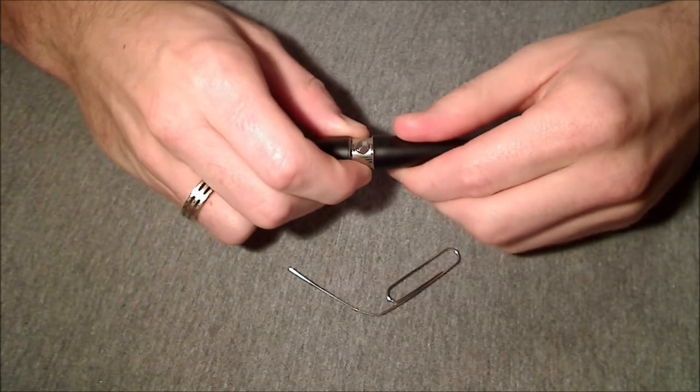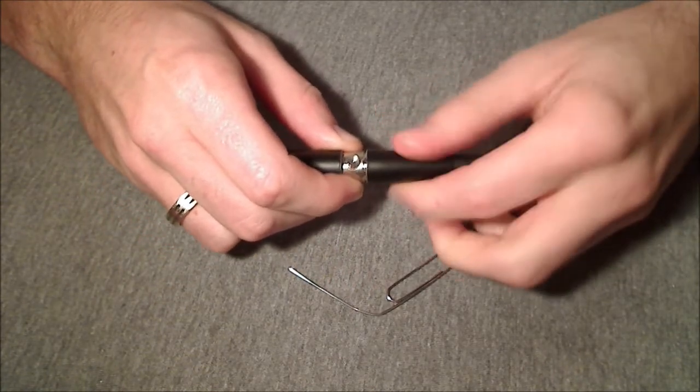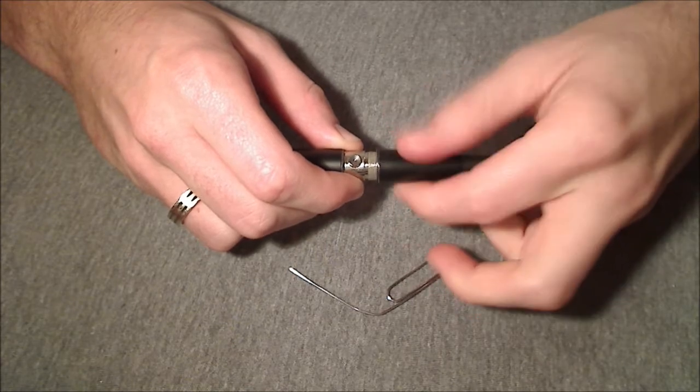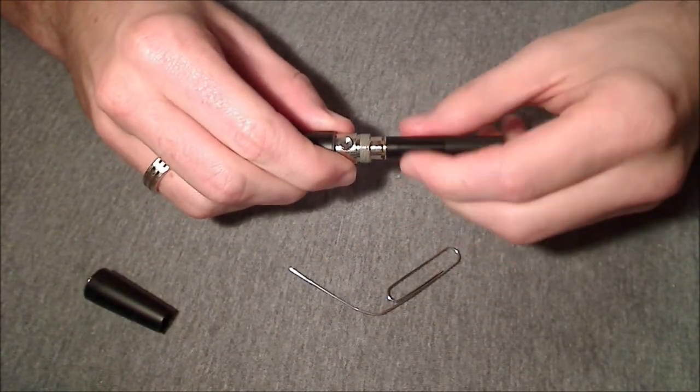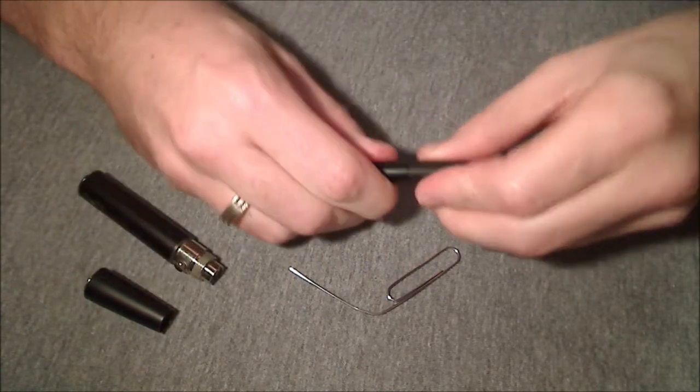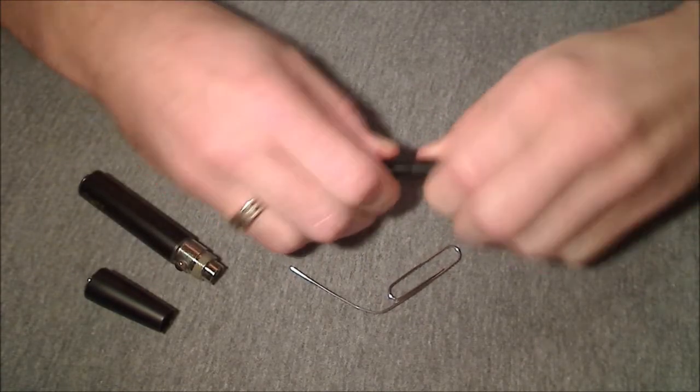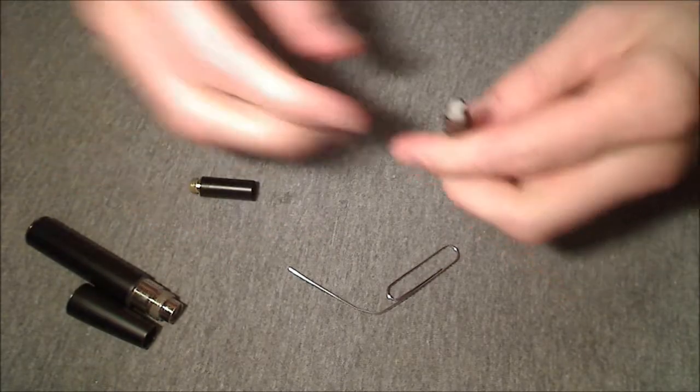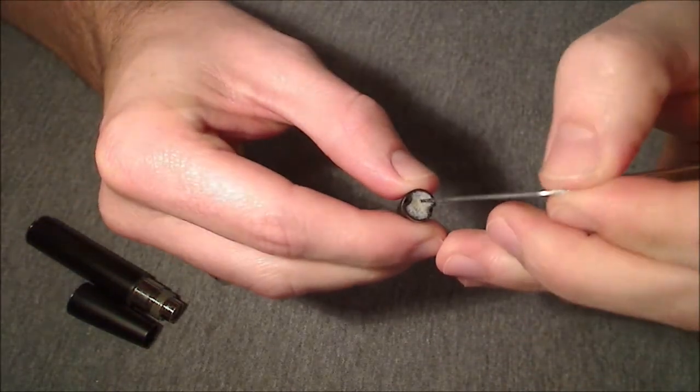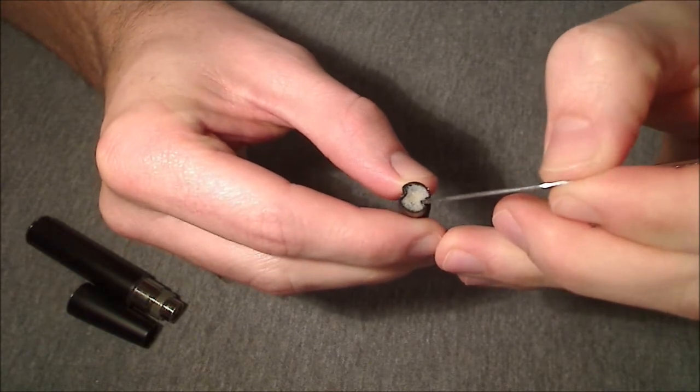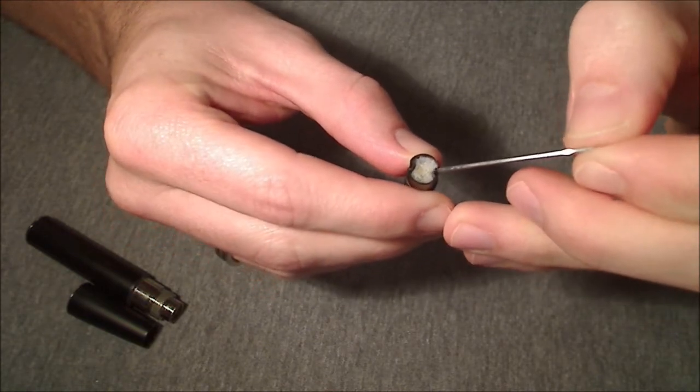On the t-rex, first thing you want to do is remove the atomizer cone and then unscrew the atomizer from the battery. Next, just pop off your cartridge here. Inside the cartridge you will see the filler, which is all the white stuff.